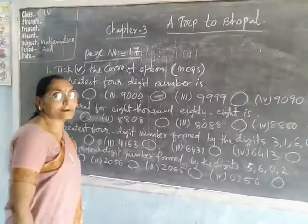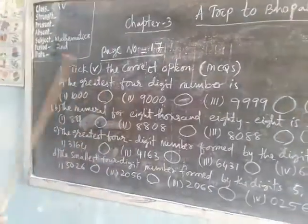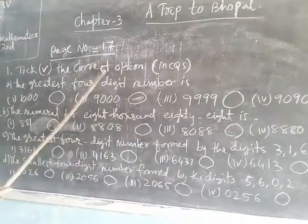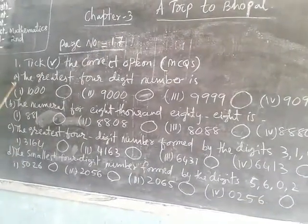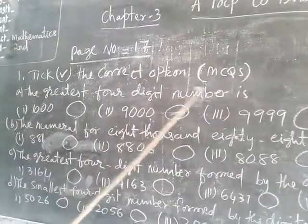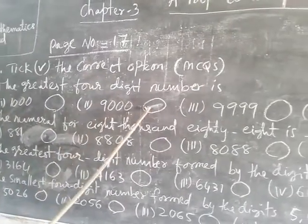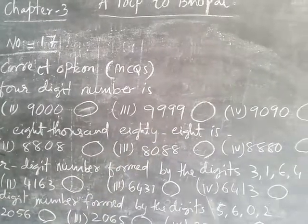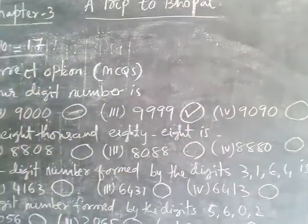Now open your workbook page number seventeen. There, question number one — tick the correct option; MCQs are given. The greatest four-digit number — is it one thousand? No. Is it nine thousand? That is also not correct. Is it nine thousand nine hundred and ninety-nine? Yes, it is the greatest four-digit number. You put the tick for the third option.